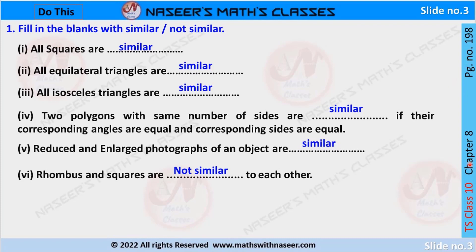We are discussing page number 198, chapter 8: similar triangles. We fill the first blank with 'similar' because all squares are similar. We already know that in a square each angle is equal to 90 degrees and their corresponding sides are in the same ratio.